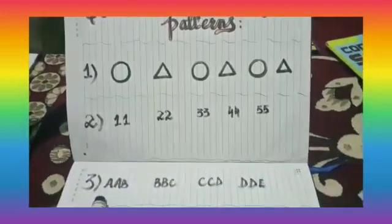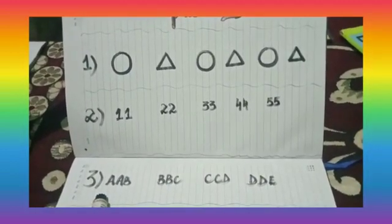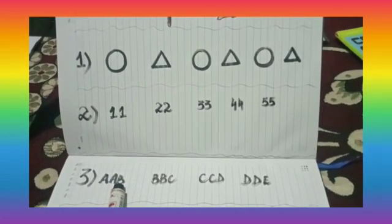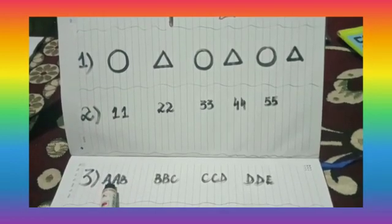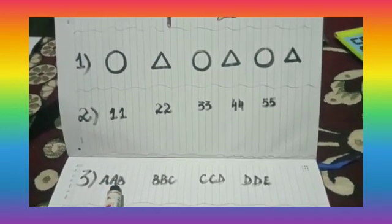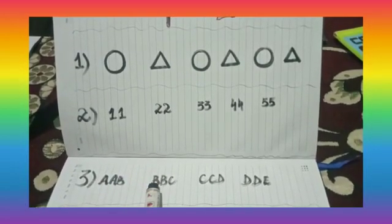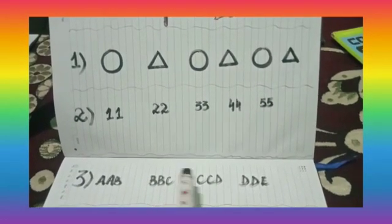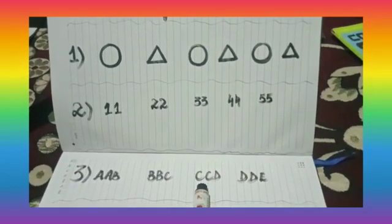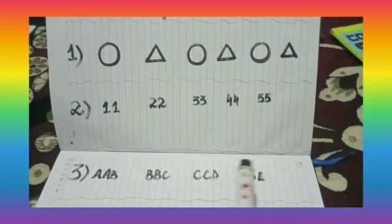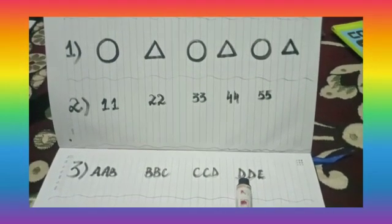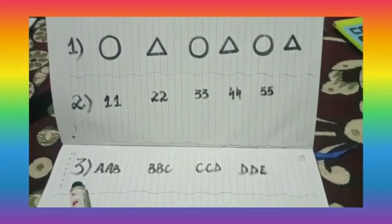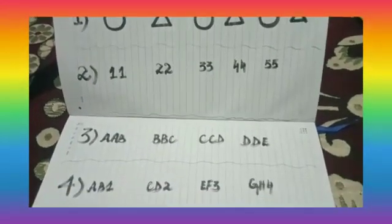In the third example we have a letter pattern. The pattern is A, A, B — that means two times A, one time B. Next we have B written two times, then C written two times, then D written two times, then E. Even this sequence forms a letter pattern.